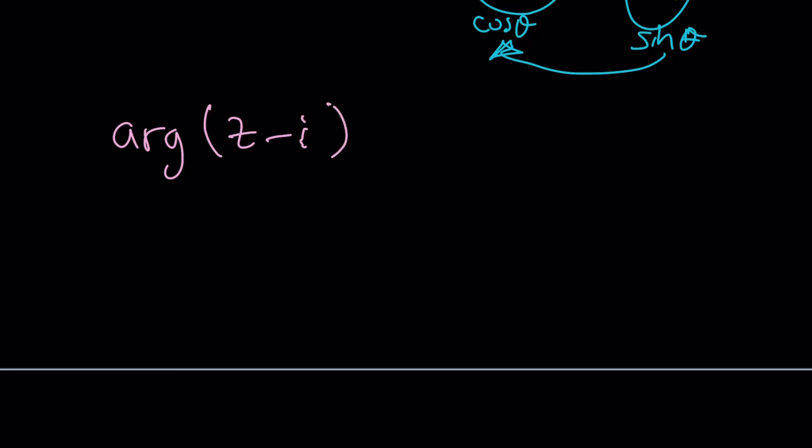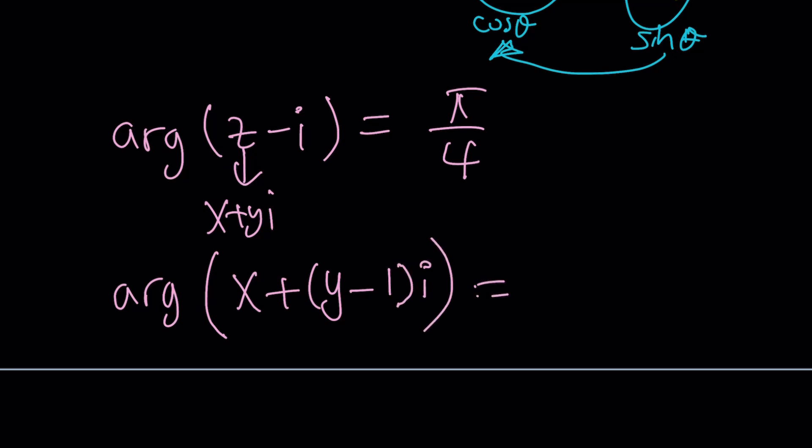Let's see how we can handle this without getting into vectors, because vectors are boring, in my opinion. Again, I could be wrong. We're going to go ahead and set this equal to π over 4, and replace z with x plus yi. That's going to give us argument of x plus, since yi and i have a common factor, we can factor it out and end up with something like this.